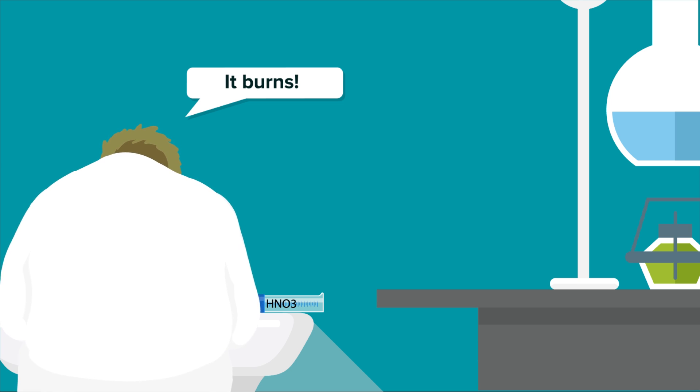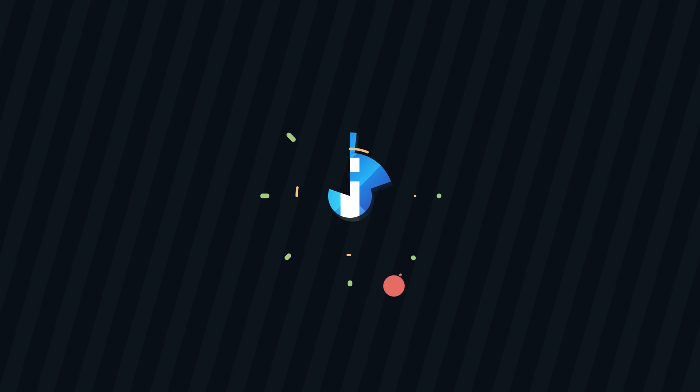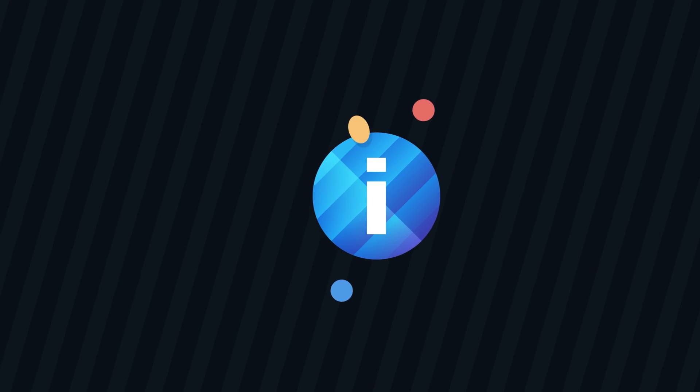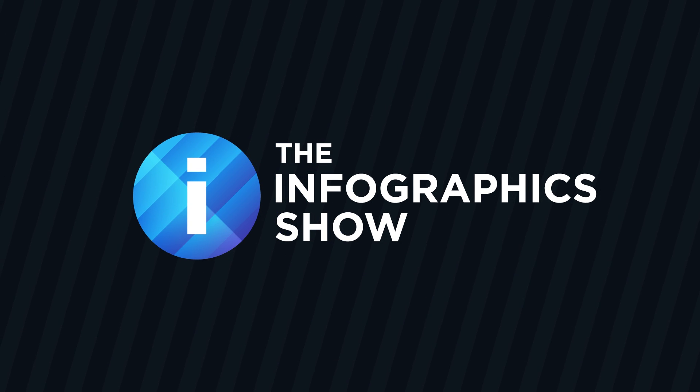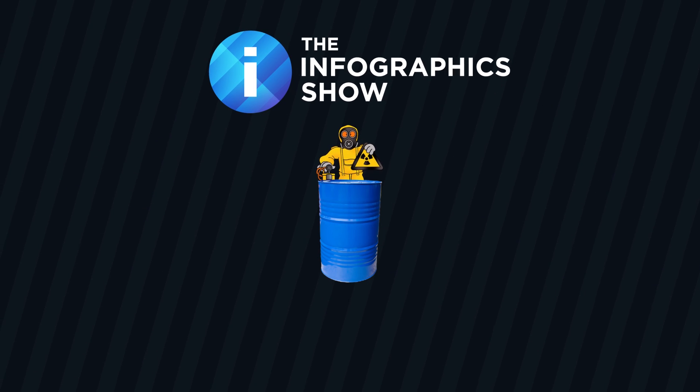Sulfuric and nitric acids are strong, but there are far stronger acids that can dissolve skin and cause horrific, irreversible damage. So what can acid like this do to a person if they are fully submerged in the toxic broth? That's what we'll find out in this episode of the Infographics Show, What If You Fell Into Acid?